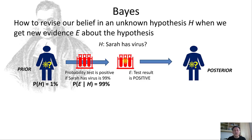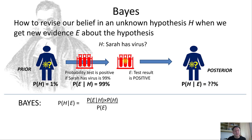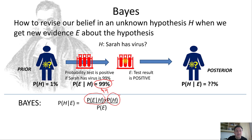The question is: what is the revised belief, which we call the posterior probability — the probability that Sarah has the virus given the positive test? Bayes Theorem tells us how to update that prior probability to get the posterior. The formula is: P(H|E) — the thing we want to know — expressed mathematically in terms of things we do know. P(E|H) is 99%, and P(H) is 1%.